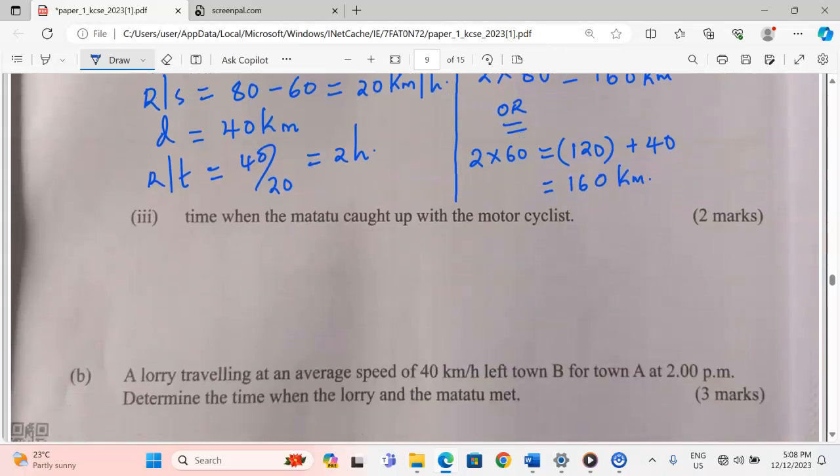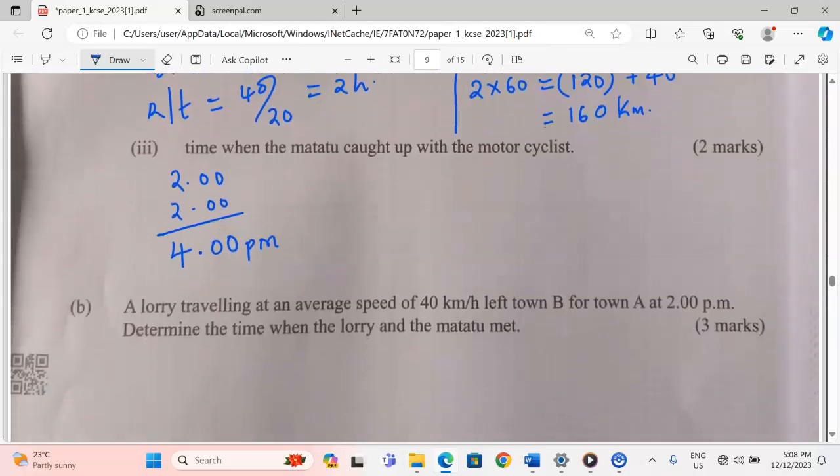In part 3, the time when the matatu caught up with the motorcyclist. From 2 PM, we are adding 2 hours. This is going to be exactly 4 PM. So that is the time they will catch up.